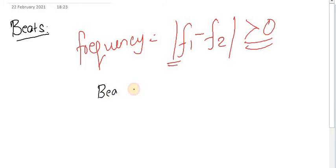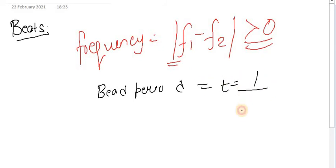The beat period T equals 1 by (f₁ − f₂). This is the time period of beats.